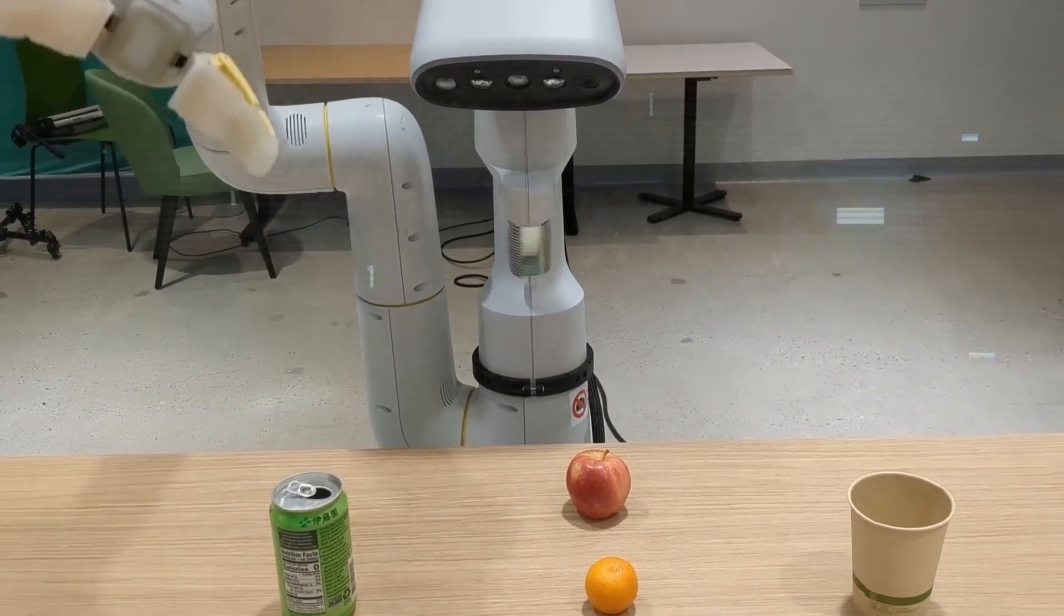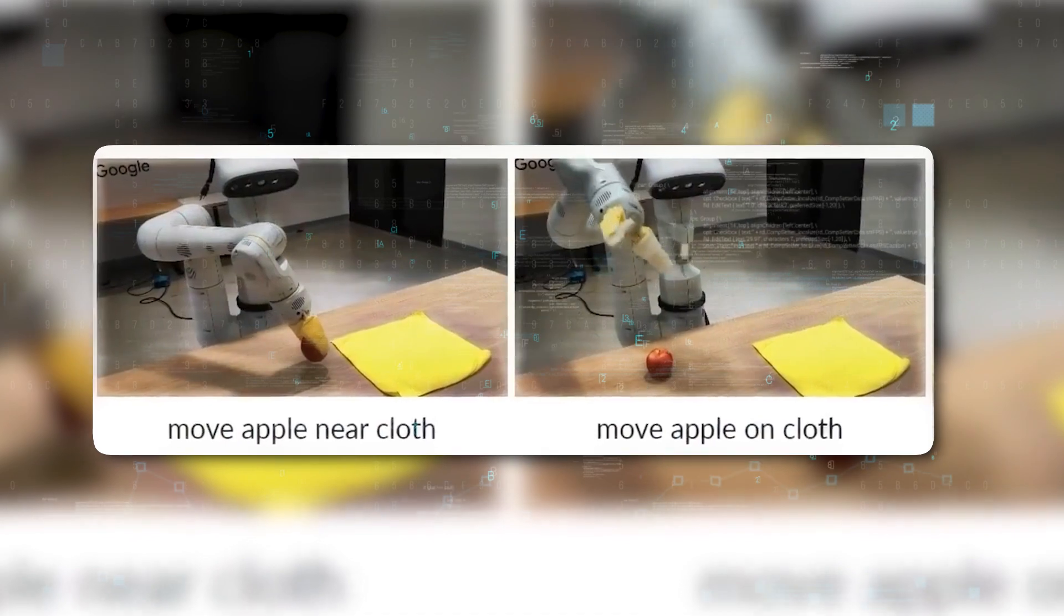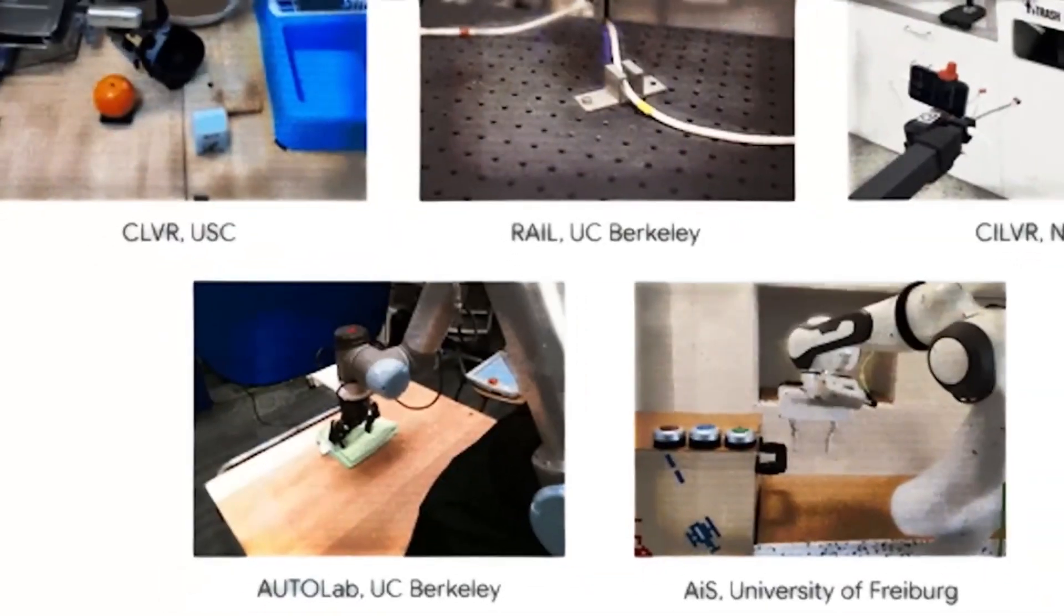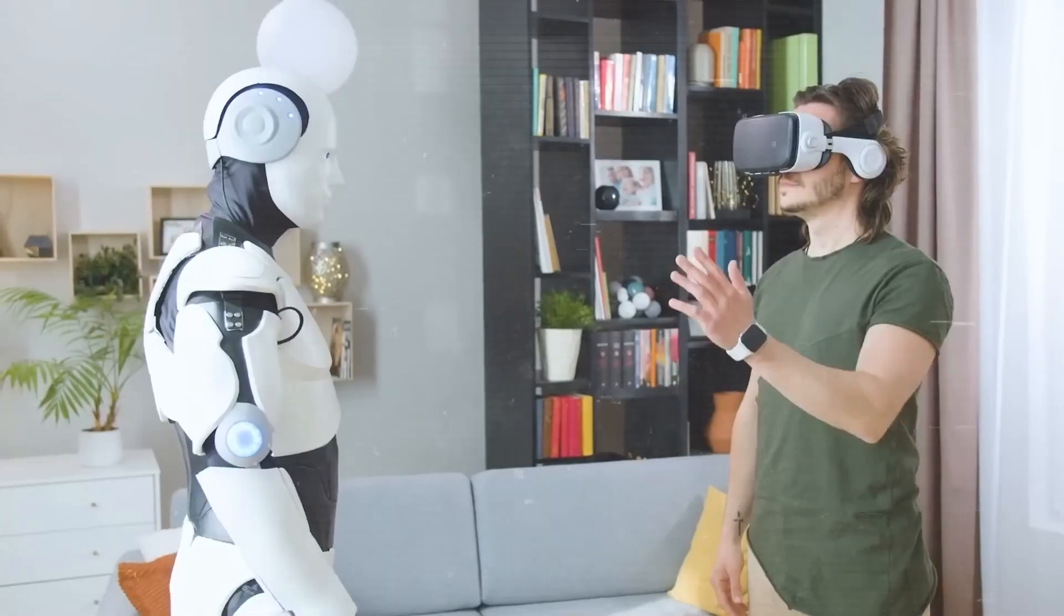And not only these were results that the researchers could be proud of, the robots began understanding intricate details. For instance, they could tell the difference between placing an apple near a cloth versus on the cloth. A distinction that seems simple to us, but is a huge leap for a robot.